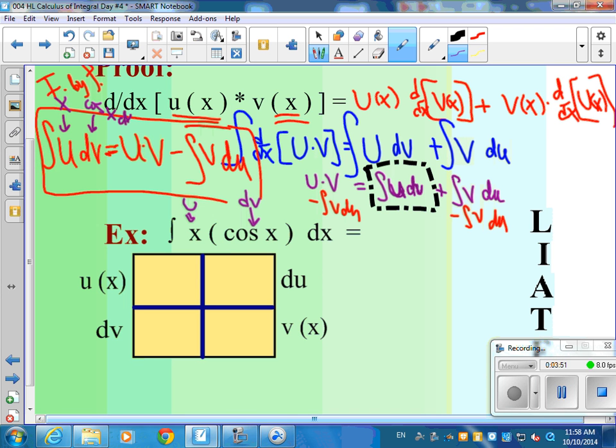We're going to figure out what this whole thing is equal to. So we're going to first make a little grid, make a 2 by 2 grid, put u of x on the left, du on the right, dv lower left, v on the right. So we're going to have to fill out this grid first. So u of x, I said, was x. What's the derivative of x? 1 dx. So there you go. That's du.